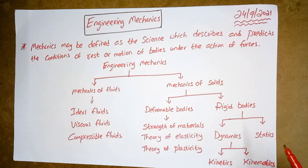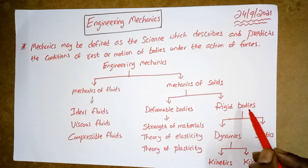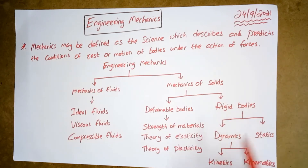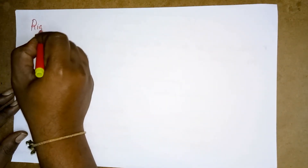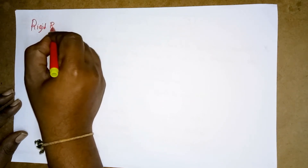Now we will start learning the basic terms which come under rigid bodies. We will move to learn what is a rigid body, what is a mass, what is a force. A rigid body is defined as a definite amount of matter, the parts of which are fixed in position relative to one another.